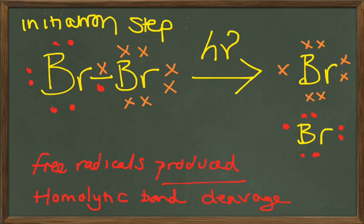And the conditions is hν, which stands for irradiating the molecules, usually with light in the visible region. We can also use heat or another radical as an initiator for that condition.